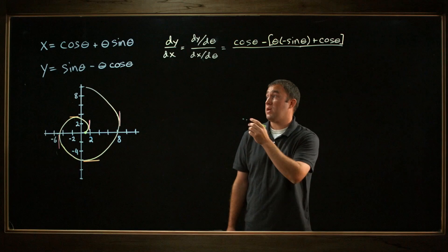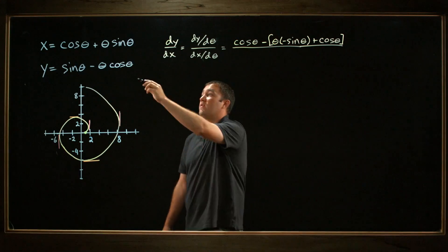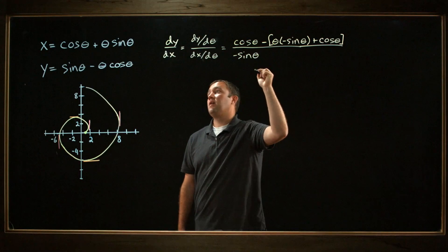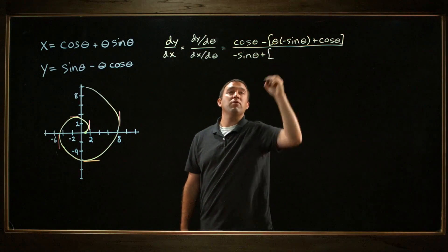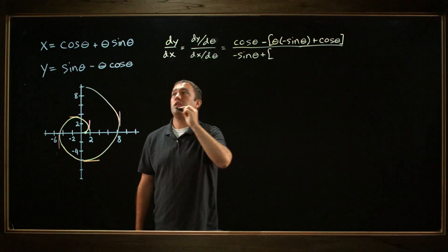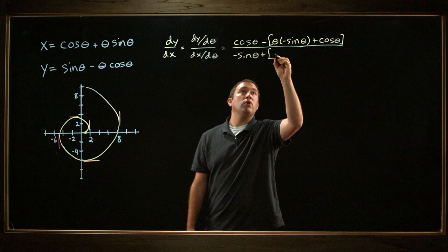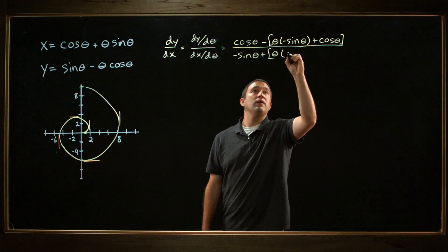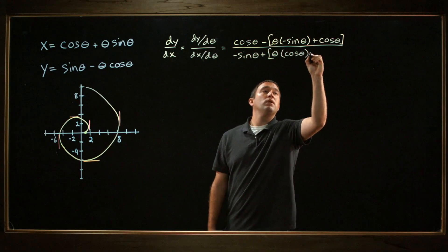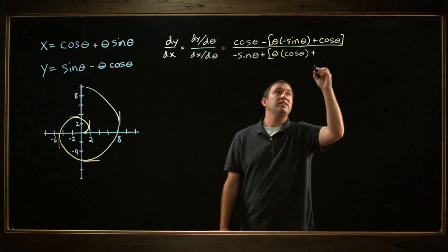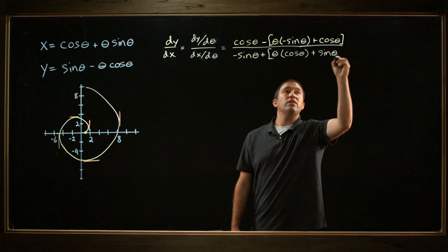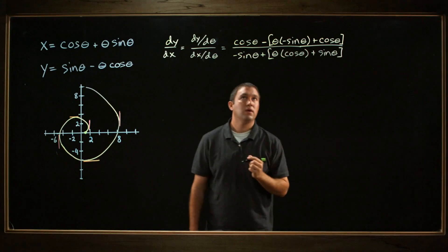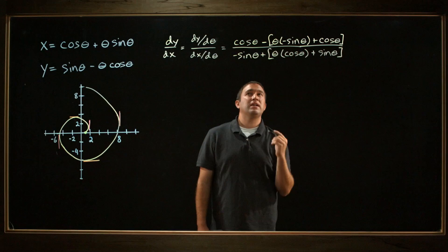Now let's do the same thing with x. The derivative of cosine theta is negative sine theta, plus — again I'm going to have to use the product rule — I'll leave theta alone, the derivative of sine theta is cosine theta, plus, leaving sine theta alone, the derivative of theta is just 1, so I won't even write that. And this is what I get.